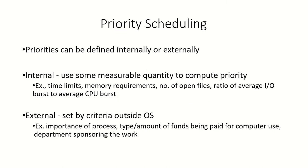Priorities can be defined internally or externally. When defined internally, the system uses measurable quantities to compute the priority of the process. These parameters could include the time limits of the process, memory requirement, how many files are opened, and the ratio of average I/O burst to average CPU burst time.